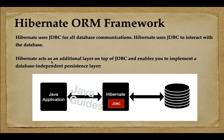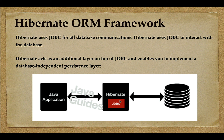A database-independent persistence layer means you can use Hibernate as a JPA provider, MyBatis as a JPA provider, or EclipseLink as a JPA provider. All these JPA providers internally use JDBC for all database communications. JDBC is a standard Java API that talks with the database, and ORM frameworks behind the scenes use JDBC internally for all database communications.